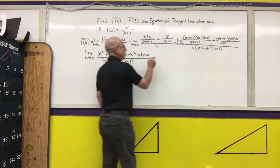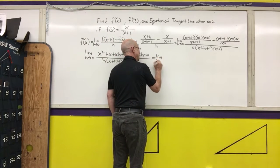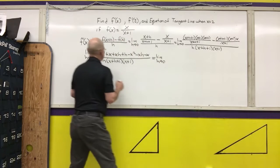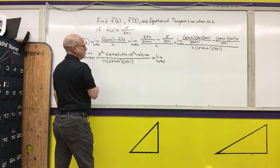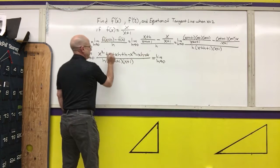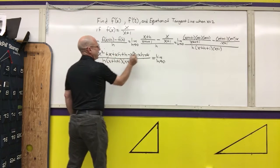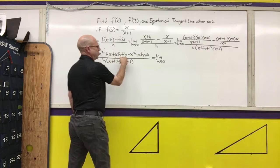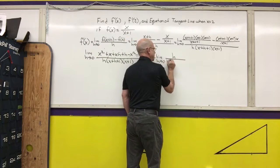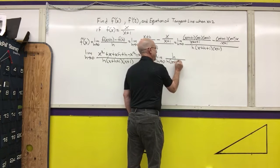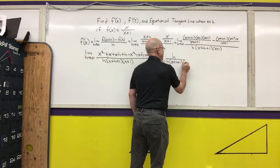Simplify the numerator. The x squareds cancel, the x's cancel, and we're left with an h in the numerator. So I get h over h times x plus h plus 1 times x plus 1.